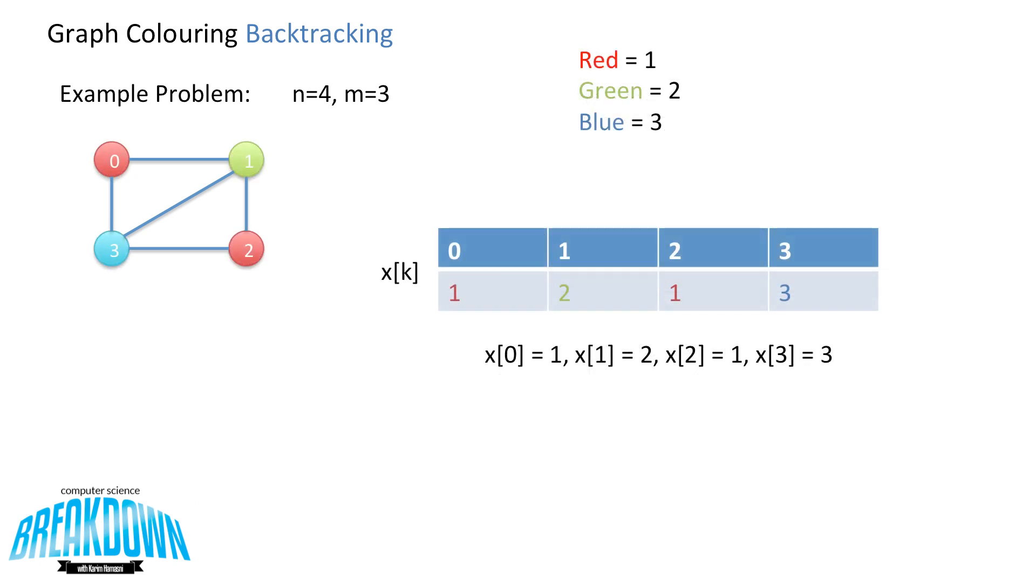So just to clarify what XK is, if we have an array 0, 1, 2 with indexes 0, 1, 2, 3, and 4, and if we had a solution like the one shown here, then X of 0 is equal to 1, which is red. X of 1 is equal to 2, which is green. X of 2 is equal to 1, which is red. And X of 3 is equal to 3. And that represents the coloring of the graph that you can see in the top left-hand corner.